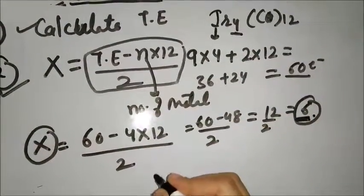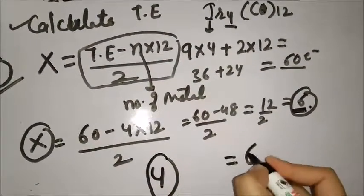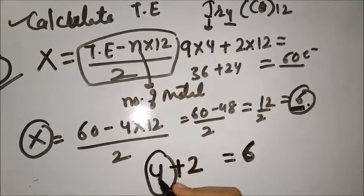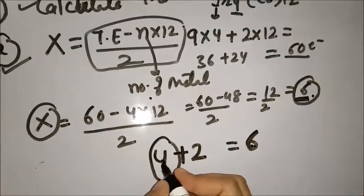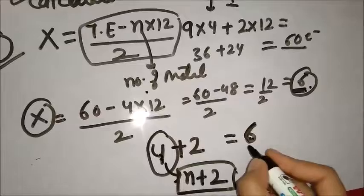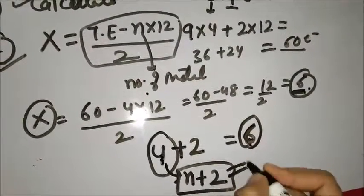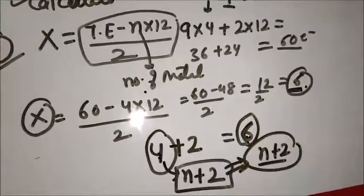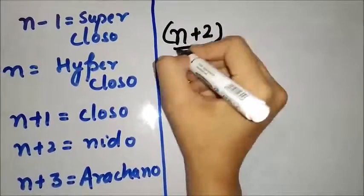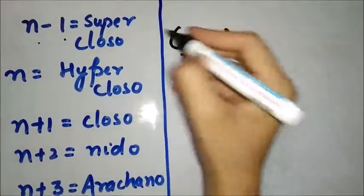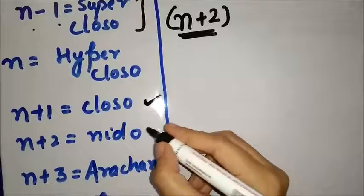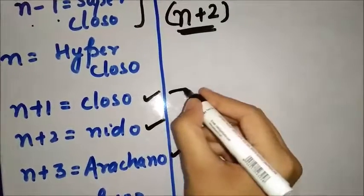Now compare x with the number of metals. The total number of metals present are 4 and x comes out to be 6. So we add 2 to n: n + 2 equals 6. This gives you the structure n + 2. The structure types are: n − 1 = super-closo, n = hyper-closo, n + 1 = closo, n + 2 = nido, n + 3 = arachno. These three are the most important structures in Wade nomenclature.